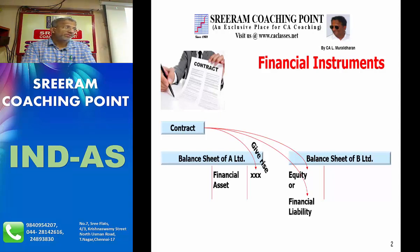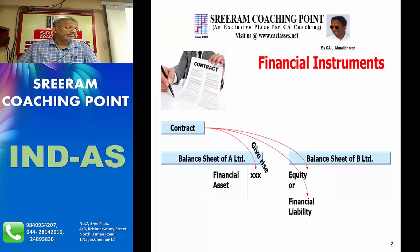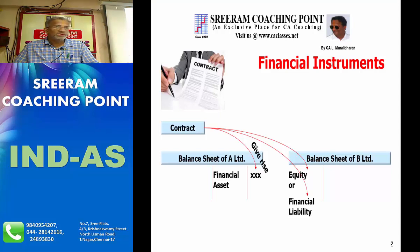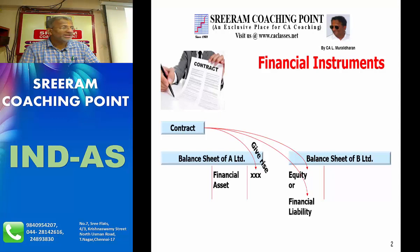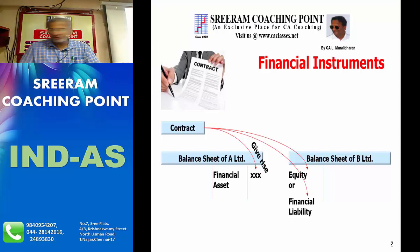That means every expenditure you spend is in the form of cash. But a monetary item means the values at which they are stated will be the values at which we realize it or pay for it. Even a fixed asset like a car is money spent, but that is not the value at which it is stated in the balance sheet after charging depreciation. And when you sell, you can't expect that item to be sold at book value.